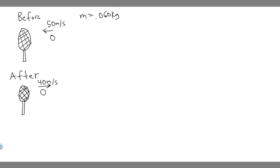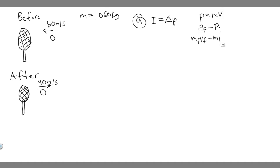Let's start with Part A. We're trying to solve for the impulse, which we denote by I. Impulse is equal to the change in momentum. Momentum is equal to mass times velocity, so we find the change by taking the final momentum minus the initial momentum. That gives us m·v_final minus m·v_initial. Since mass is constant, we can factor it out: impulse equals m times (v_final minus v_initial). This is the formula for the change in momentum, and the change in momentum is the impulse.